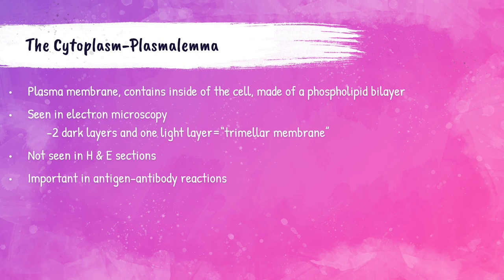The plasmalemma, also called the plasma membrane, is made of a phospholipid bilayer and surrounds the contents of the cell. It is visible with the electron microscope as three different layers — two appear dark and one appears light — so it is often referred to as a trilaminar membrane. These are not seen in H&E stained sections but are important in reactions of antigens and antibodies.